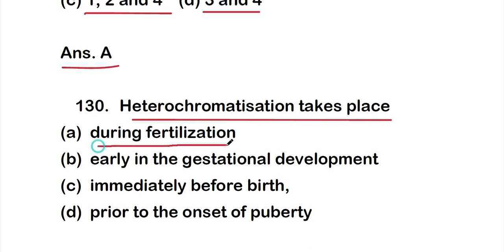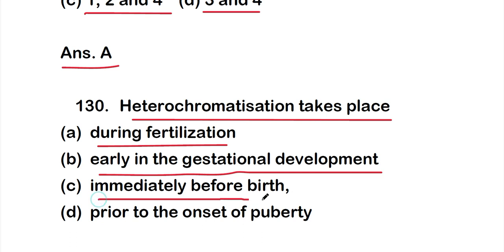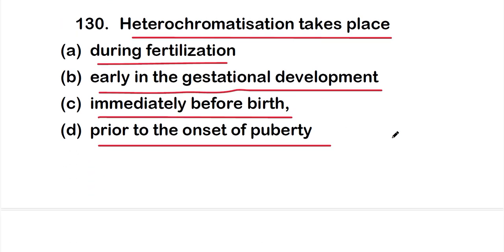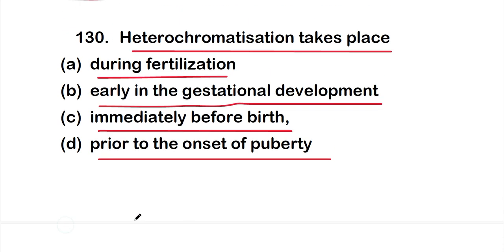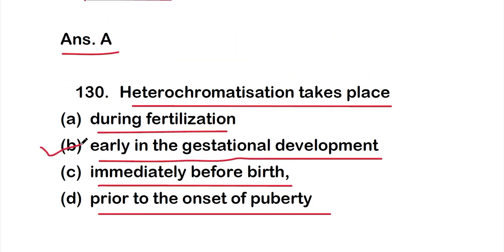Question 130: Heterochromatization takes place in option A - during fertilization, option B - early in gestational development, option C - immediately before birth, or option D - prior to the onset of puberty. The right answer is option B — heterochromatization takes place early in gestational development.